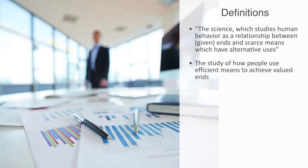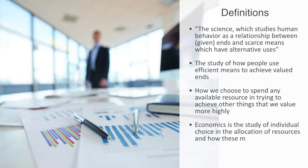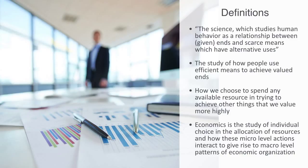On this most basic level, economics is defined as a study of how people use efficient means to achieve valued ends. From this perspective, economics is about how we choose to spend any available resource, such as our time or effort, in trying to achieve other things that we value more highly. This is, of course, not just on the micro level of the individual, but also on the macro level, that is to say how organizations and society at large uses scarce resources to produce valuable commodities and distributes them among the people. To flesh out our definition a bit further, we might say, economics is the study of individual choice in the allocation of resources, and how these micro level actions interact to give rise to macro level patterns of economic organization. The manifestation of all this activity is what we call an economy, consisting of natural resources, technology, social and economic institutions.